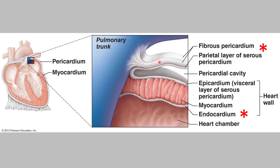In between the outer layers and the inner endocardium is the actual muscular wall of the heart called the myocardium. The myocardium is cardiac muscle — the part of the heart wall that contracts and relaxes to cause heartbeats. It is very thin around the atria and much thicker around the ventricles.